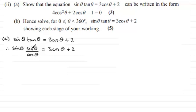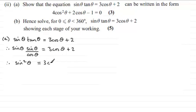Sine theta times sine theta gives sine squared theta, divided by cos theta. Now I'm going to multiply each term by cos theta, so that just leaves sine squared theta on the left. And then 3 cos theta times cos theta gives 3 cos squared theta, plus 2 times cos theta gives 2 cos theta.